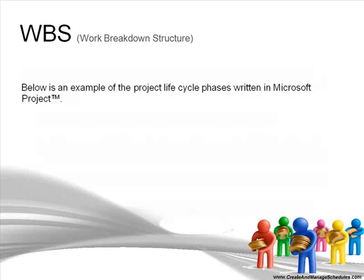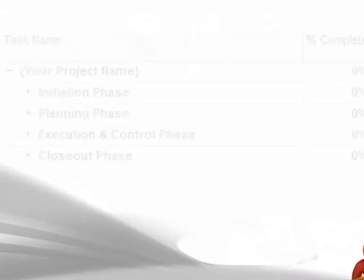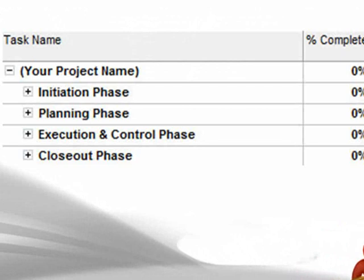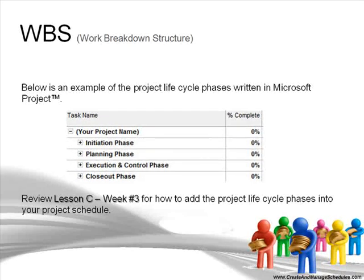Identify the lifecycle phases first because this will allow you to add the proper project management controls. Below is an example of a project lifecycle with phases written in Microsoft Project. Here you see the initiation phase, planning phase, execution and control phase, and closeout phase. If you review lesson C in week 3 of this video coaching tutorial, you'll see how to add the project lifecycle phases into your project schedule.